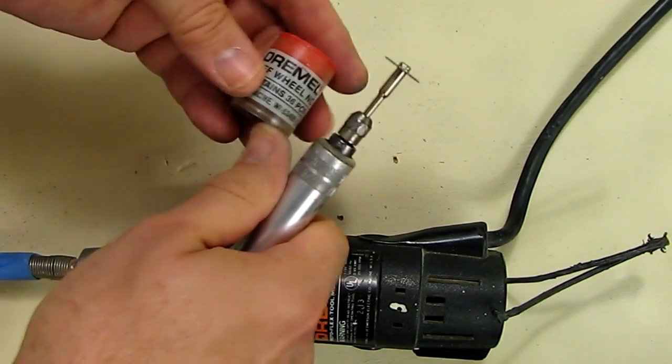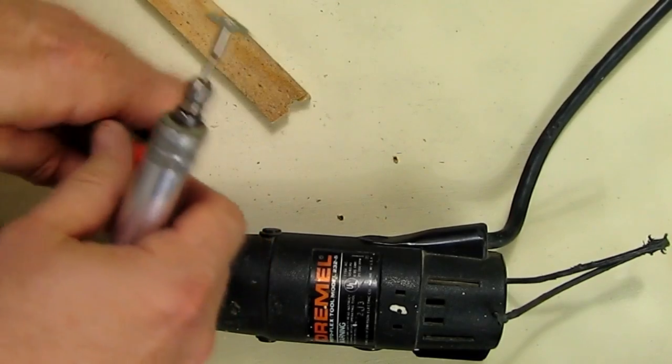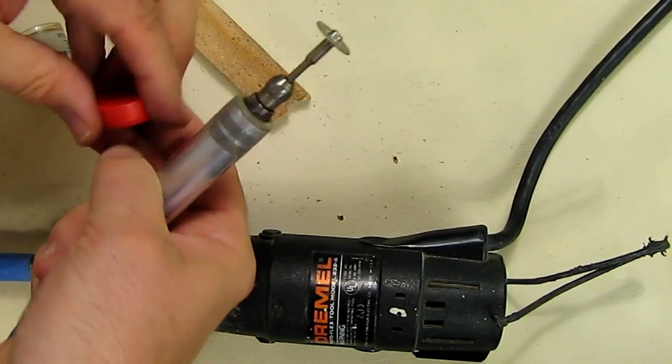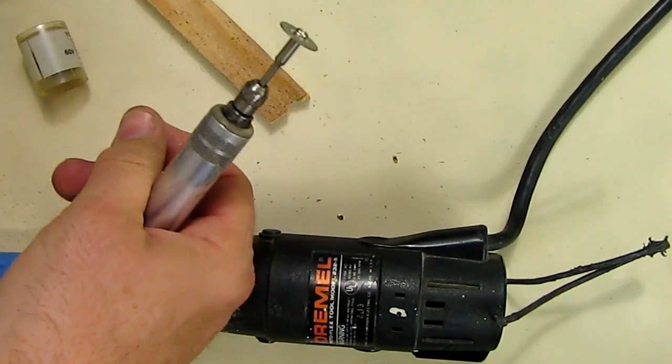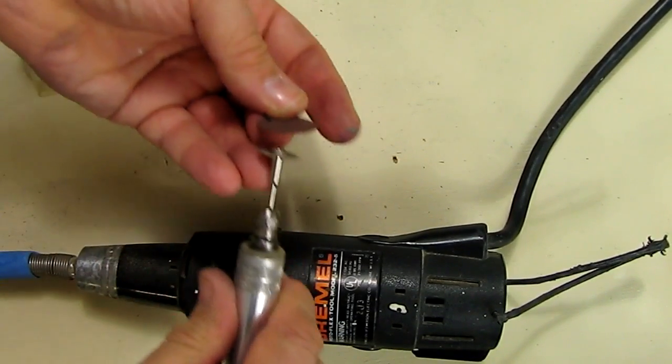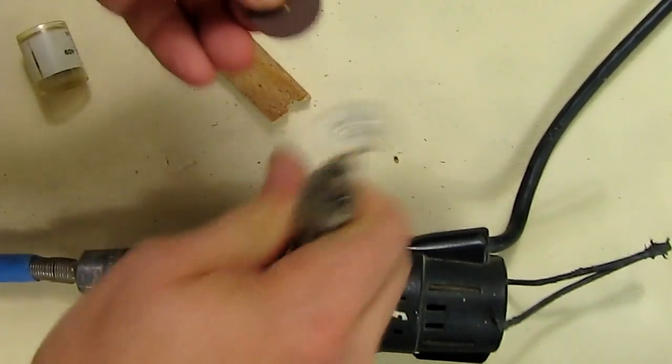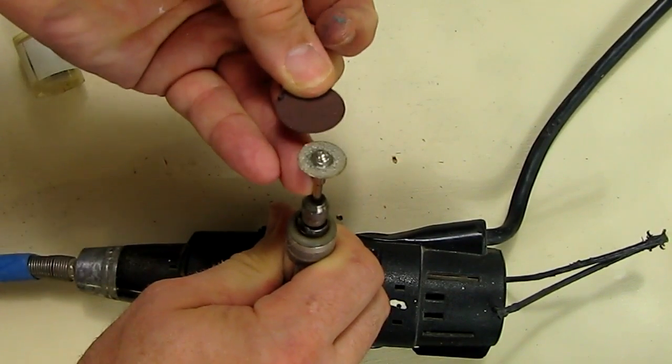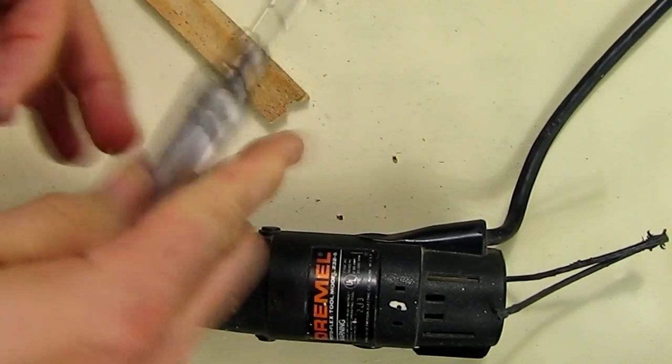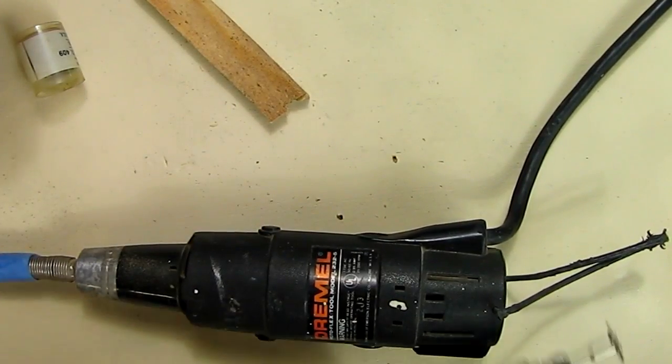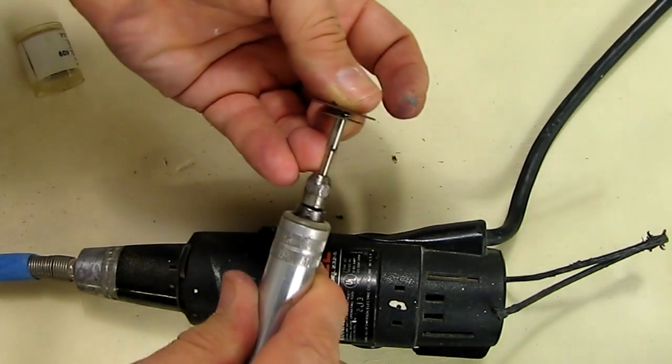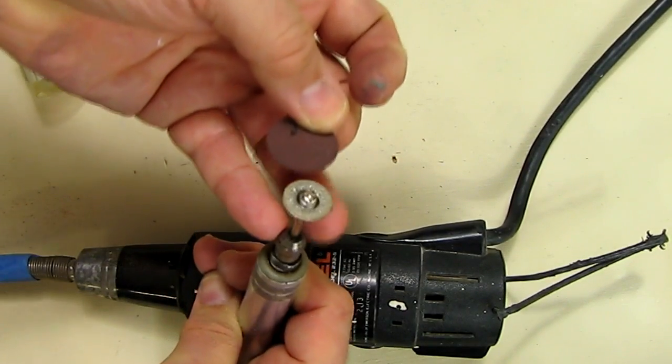And if you look at a typical Dremel cutoff wheel, you look at the diameter of that. In fact, you can clearly see the difference in the diameter. That makes a big difference in the ability to reach while you're working on a project.